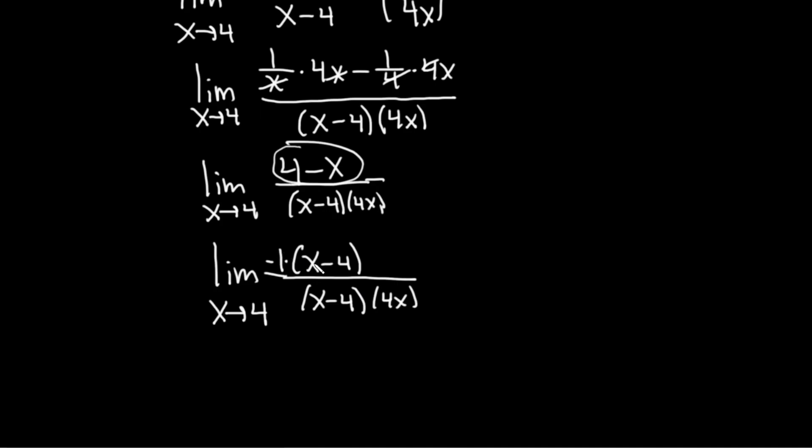Negative 1 times x is negative x. Negative 1 times negative 4 is positive 4. If you're wondering how I knew to do that it's because I've done it before, right. It comes up a lot in these types of problems.